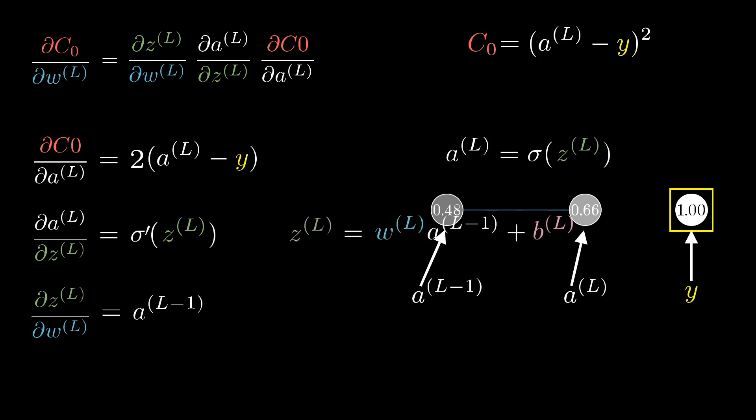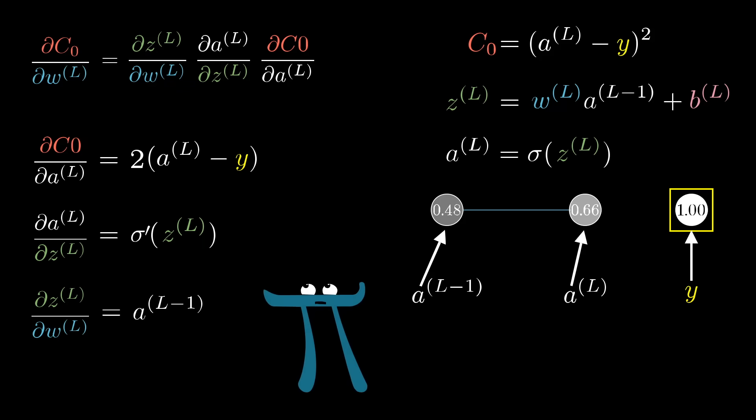Now, I don't know about you, but I think it's easy to get stuck head down in the formulas without taking a moment to sit back and remind yourself of what they all actually mean. In the case of this last derivative, the amount that that small nudge to the weight influenced the last layer depends on how strong the previous neuron is. Remember, this is where that neurons that fire together wire together idea comes in.